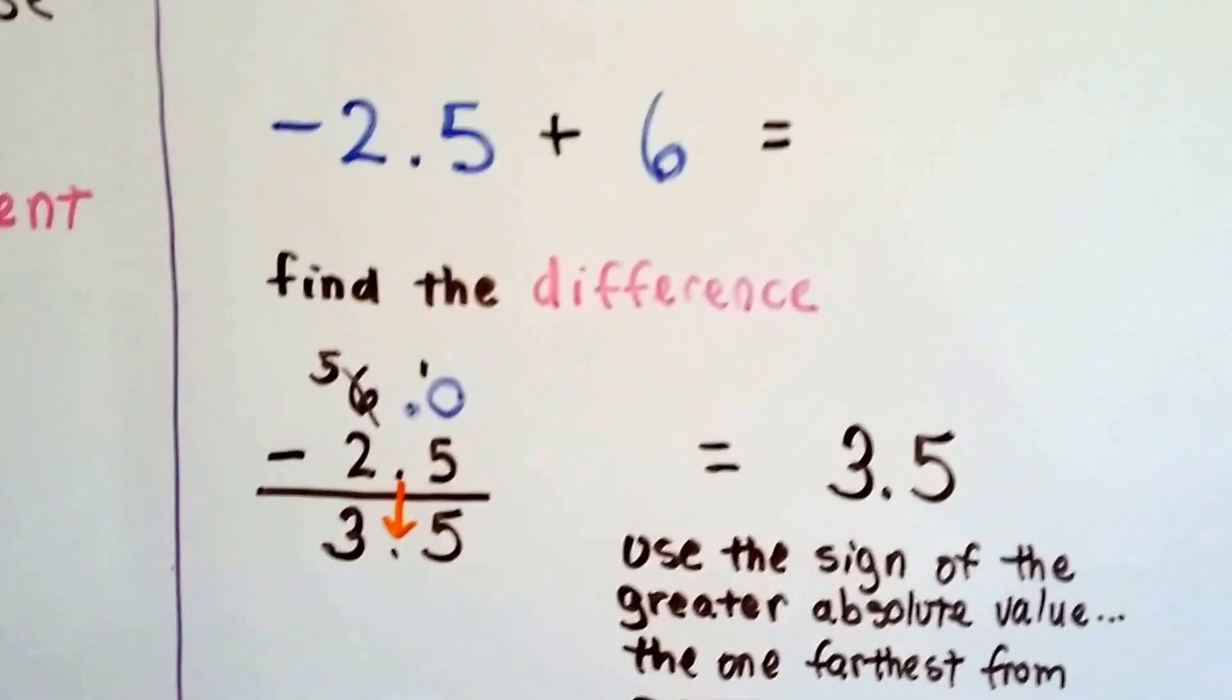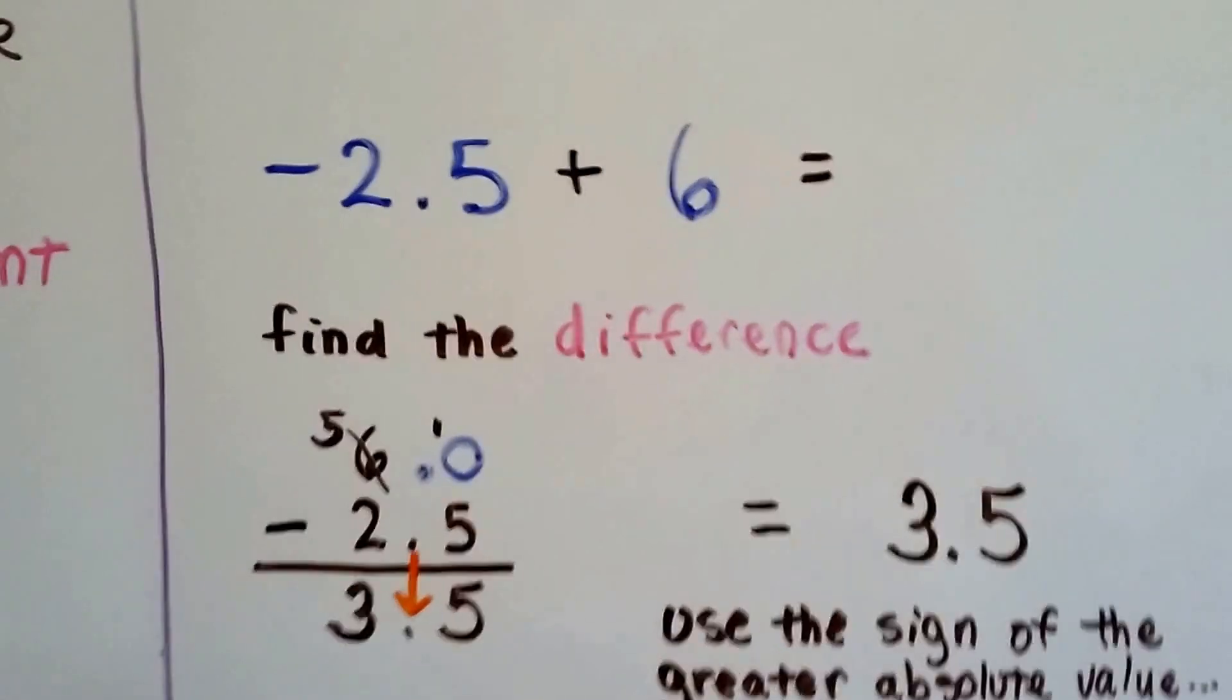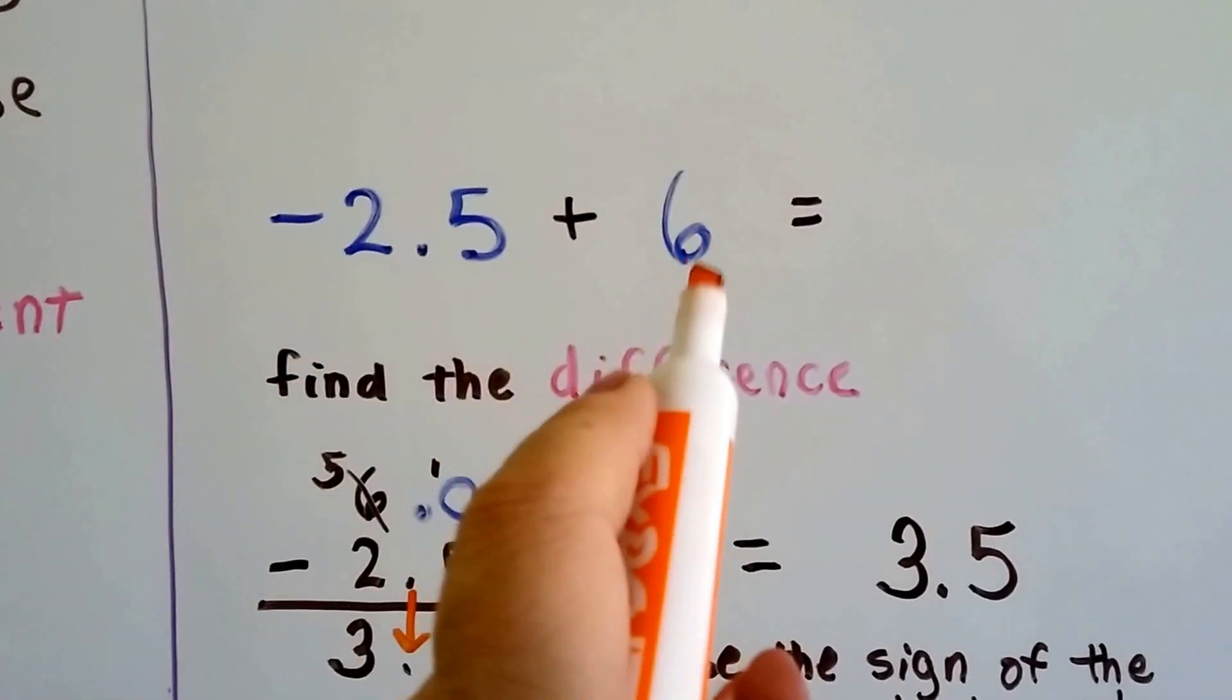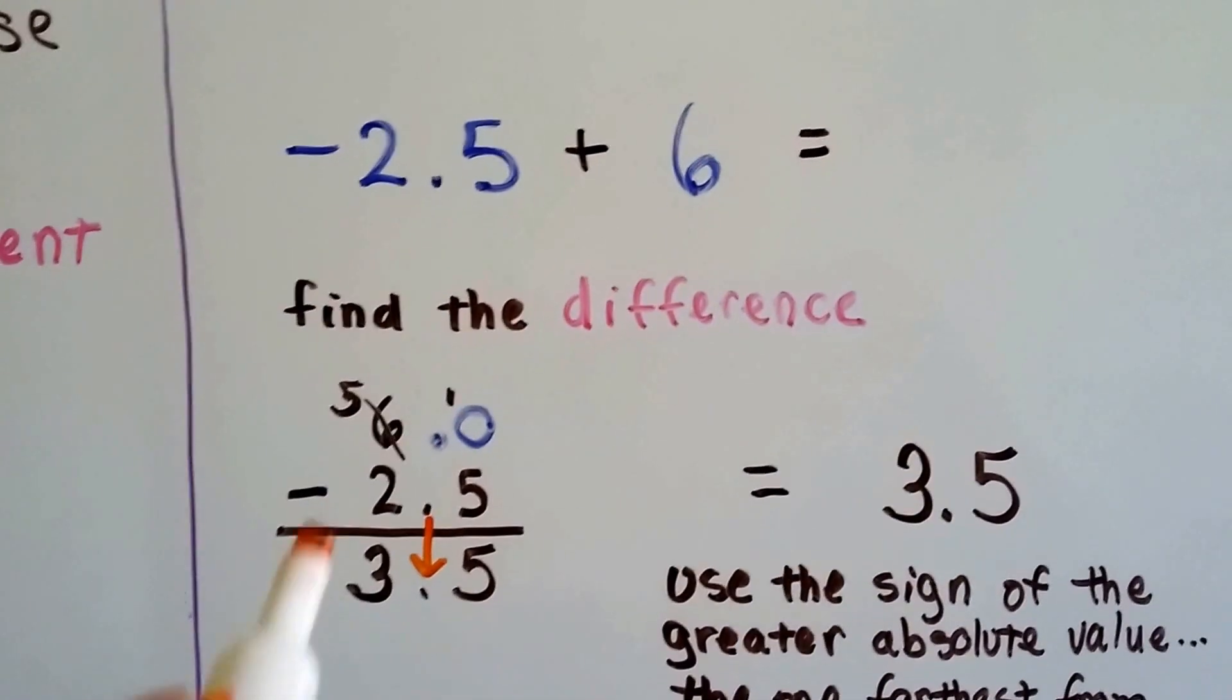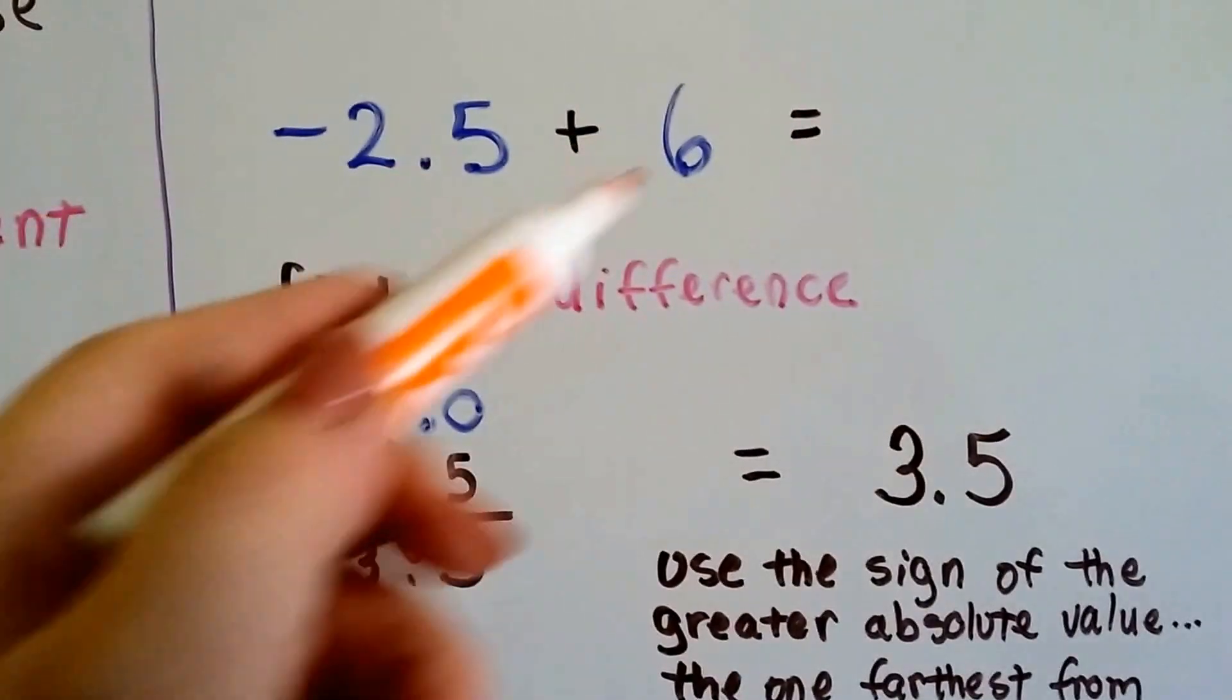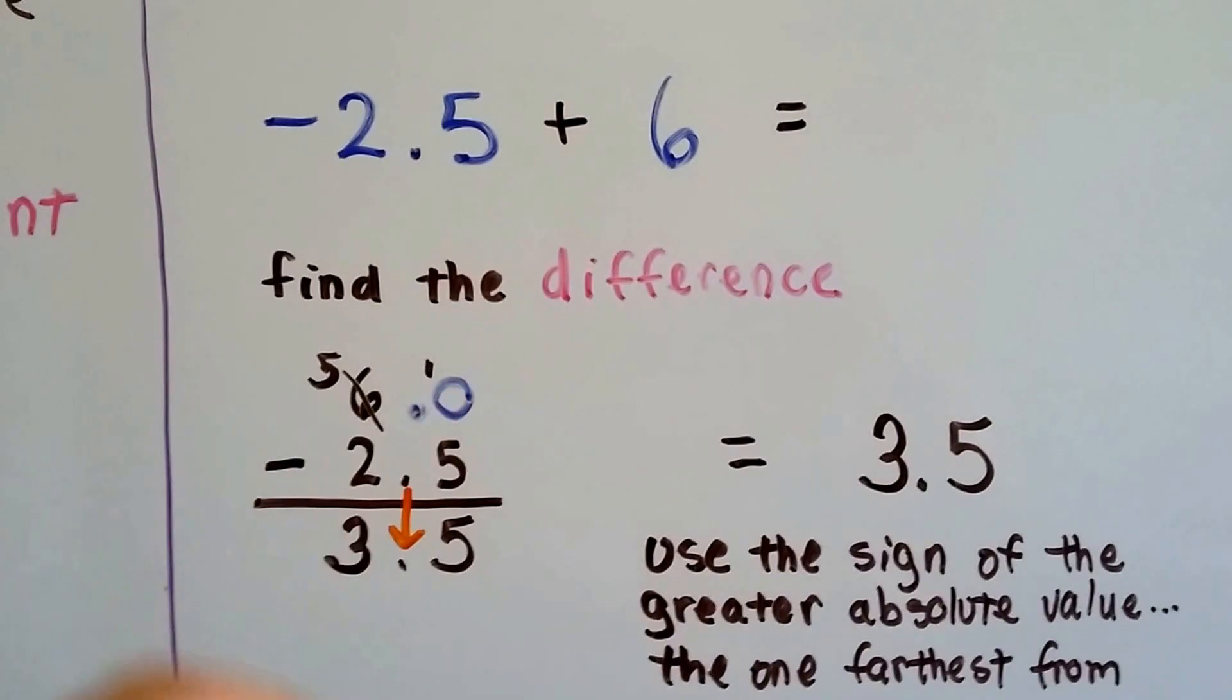Let's try this one. Negative 2.5 plus 6. So, now, we're dealing with a decimal rational number, but this one doesn't have a decimal. And we need to find the difference, so we're going to take this one away from the bigger one. So, what we do, because this one doesn't have a decimal point or any numbers after it, we give it a decimal point and a zero as a placeholder.